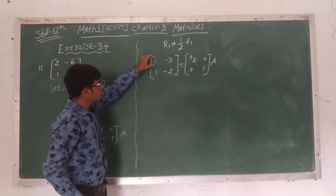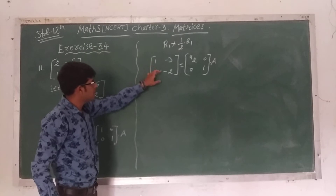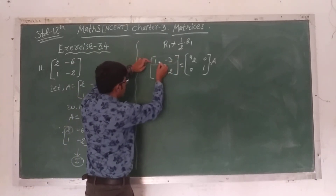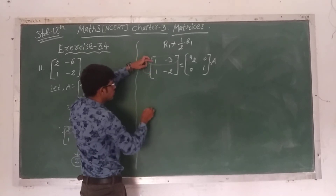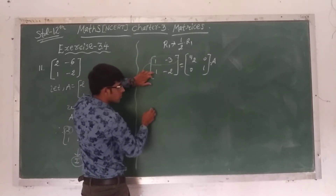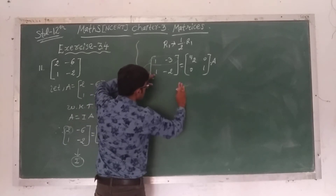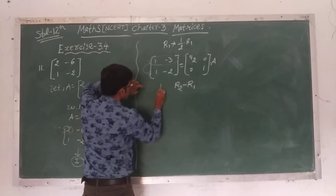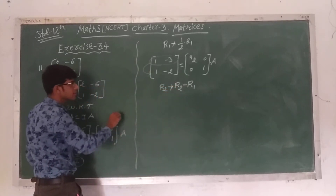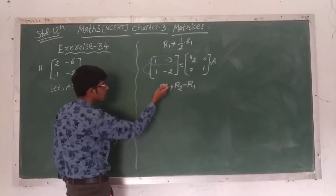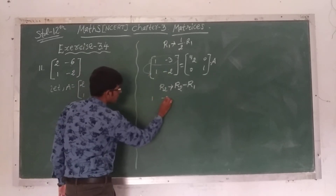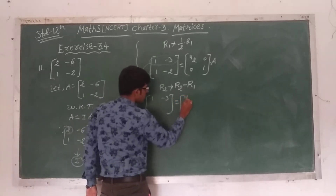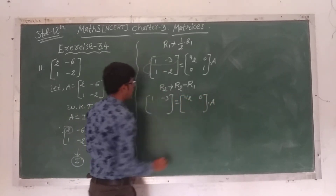What is our next goal? We have to make the A(2,1) element equal to 0. We have to multiply the first row by -1 and add to the second row, so R2 tends to R2 minus R1. First row as it is: [1, -3] and right hand side [1/2, 0]. Second row: 1−1 = 0, -2−(-3) = -2+3 = 1. Right hand side: 0−(1/2) = −1/2, 1−0 = 1. So the matrix becomes [1, -3; 0, 1] = [1/2, 0; -1/2, 1] times A.